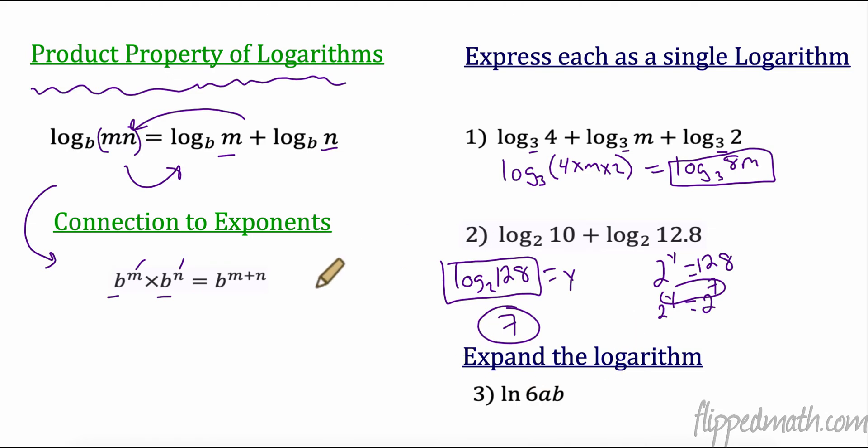Let's expand this one. So now we're going to go backwards. I have a logarithm - in this case, I have a natural logarithm. I have three factors, so I'm going to expand it. So I'm going to take the natural log of the first factor plus the natural log of the second factor plus the natural log of the third factor. And there we have it expanded out using the product property of logarithms.